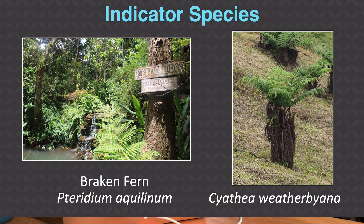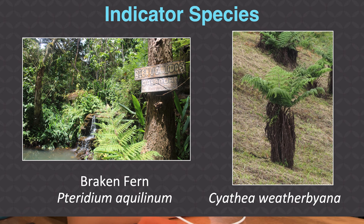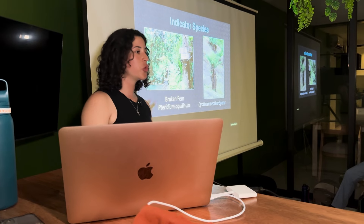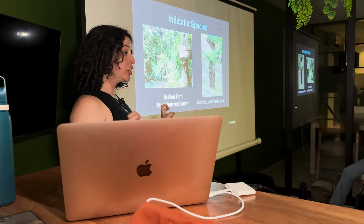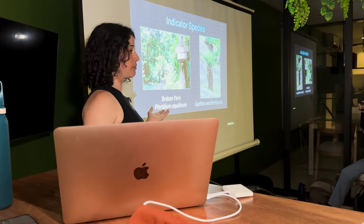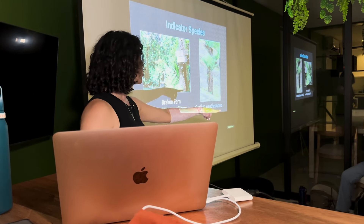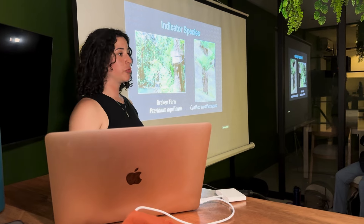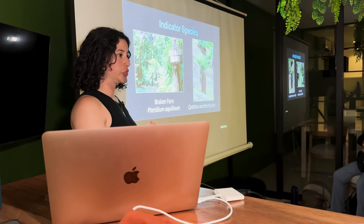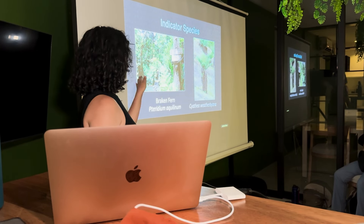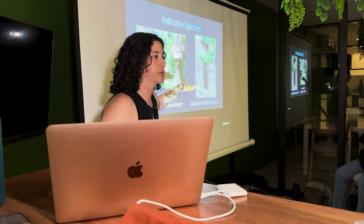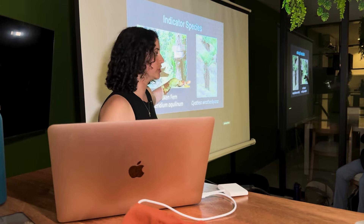Two indicator species are the bracken fern — visible in a photo taken during the visit — and the Cyanea weatherbyana tree, the only tree in this region. It can only grow up to nine feet tall, so it's still low growing compared to other trees. A photo from the agricultural area shows other trees as well because that area has been heavily invaded by non-native plants.